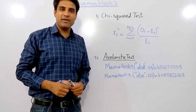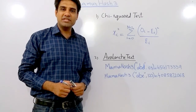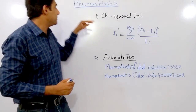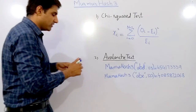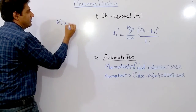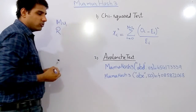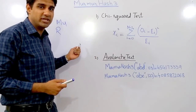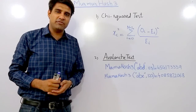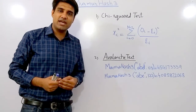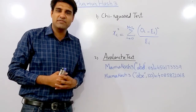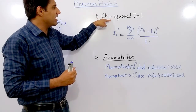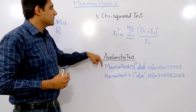Today our topic is Murmur Hashing. Murmur Hashing is a non-cryptographic hash function used for hash-based lookups. The name 'Murmur' came from two basic operations: the first one is multiply and the second one is rotate. Although XOR is also used in this hash function, it is not mentioned in the name. Before moving towards the hash function, let us first consider two basic tests that a good hash function must pass.